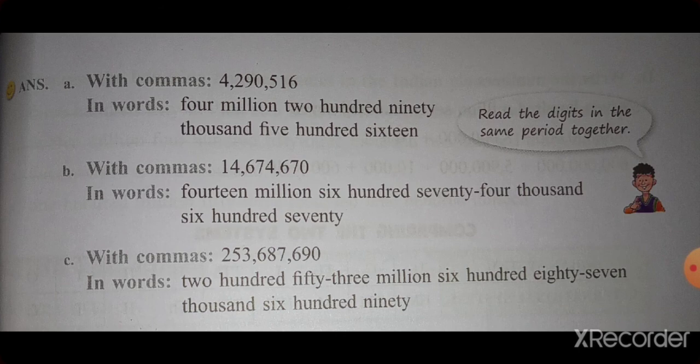About writing the name of the number: you should use the place value chart. From the previous table, we have 4 in the Millions place, so we say 4 million. 2 in the Hundred-Thousands place, so 2 hundred ninety thousand — because those digits are in the Thousands period. Next is 516. All the examples should be written in this same way.